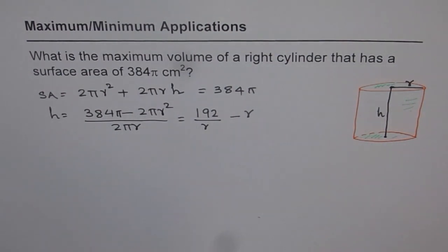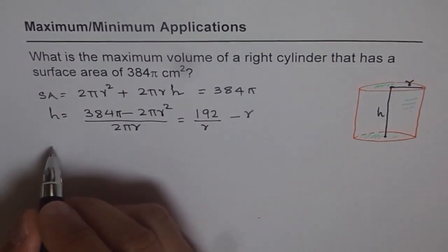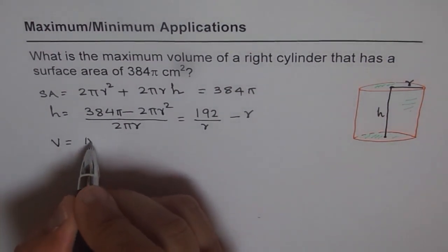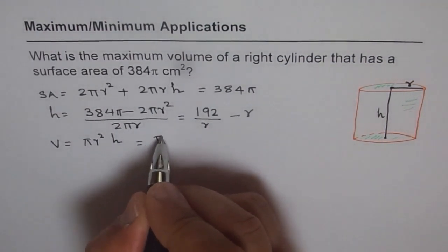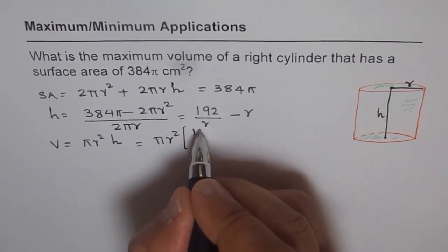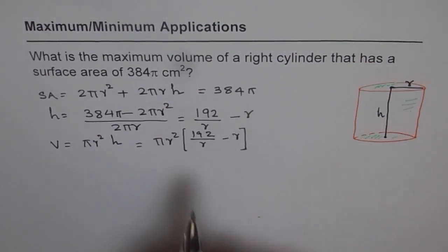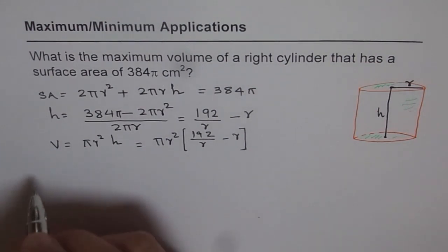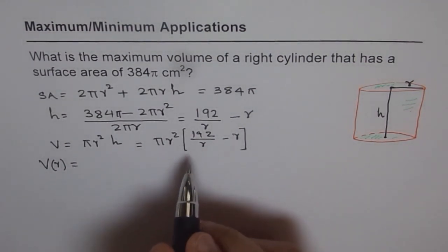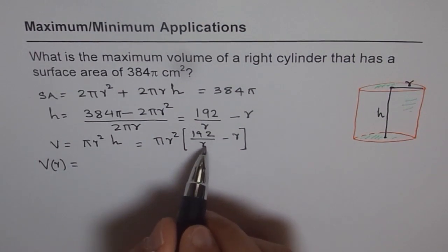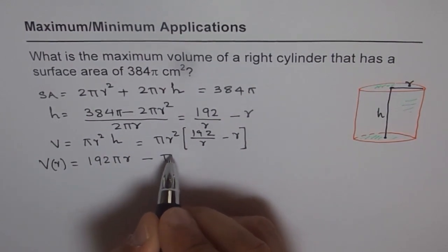That is how h and r are related. Now we need to maximize volume of this right cylinder. The formula for volume is area of the base times height, which is πr²h. We know what h is in terms of r, so we can use that. So πr² times (192/r - r). We got one equation of volume in terms of r. So volume as a function of r is πr². When you open the brackets, one r cancels, so we get 192πr - πr³.